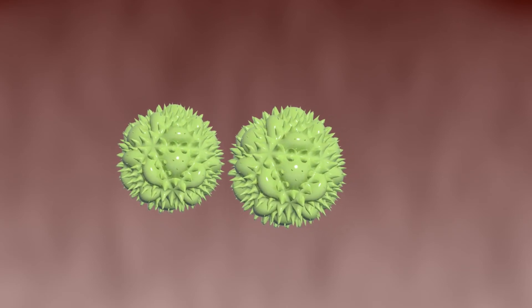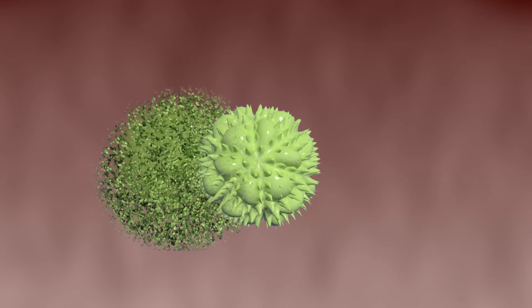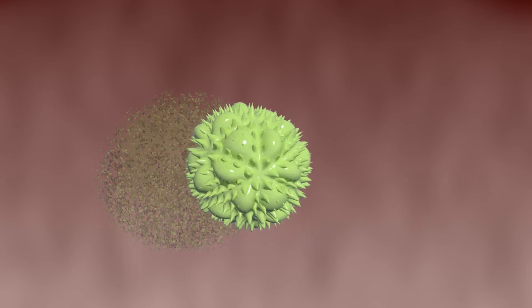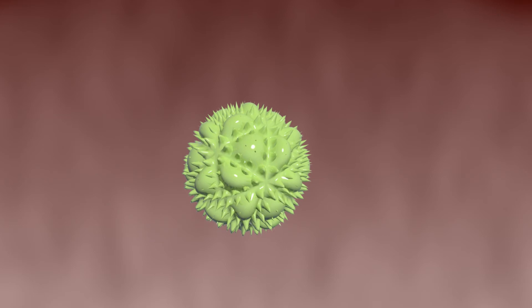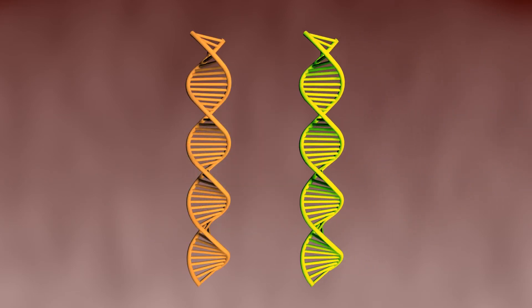When a bacteria with resistant gene dies, it releases naked DNA into the environment, which is taken up by the surrounding bacteria. This resistant gene becomes a part of the host bacteria by homologous transformation.